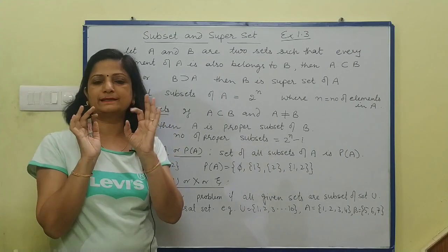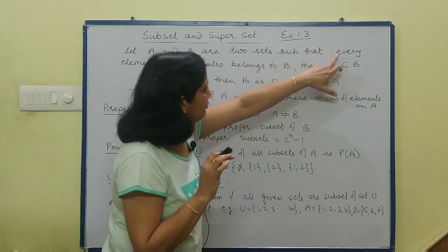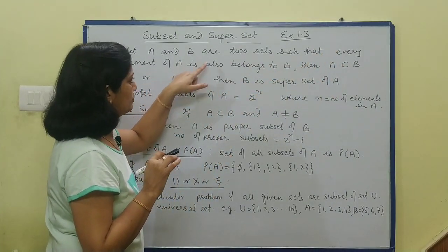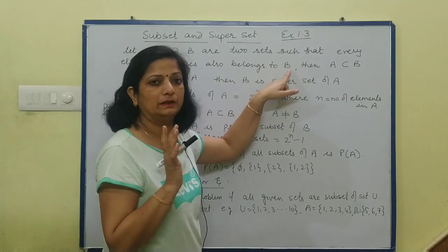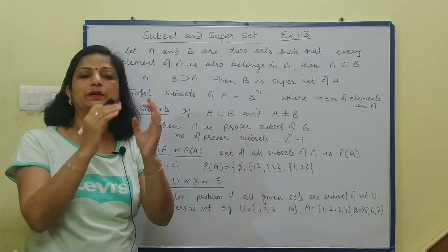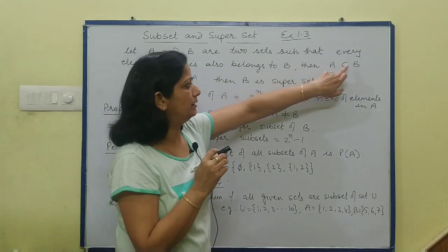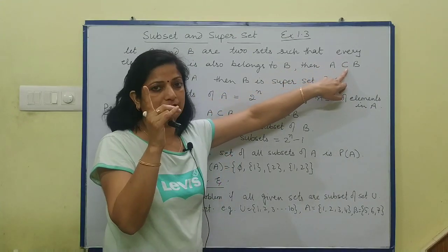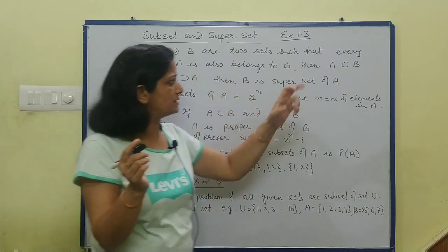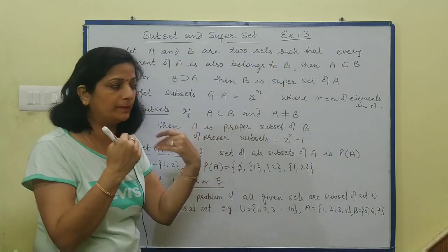Suppose there are two sets A and B. The condition is: if every element of A also belongs to B — A का हर element अगर B में भी belong करता है — then we say A is a subset of B. जैसे आप जानते हैं, बड़ों का मुँह हमेशा खुला होता है, वही same है कि यहाँ पर B larger set है और A is smaller set.